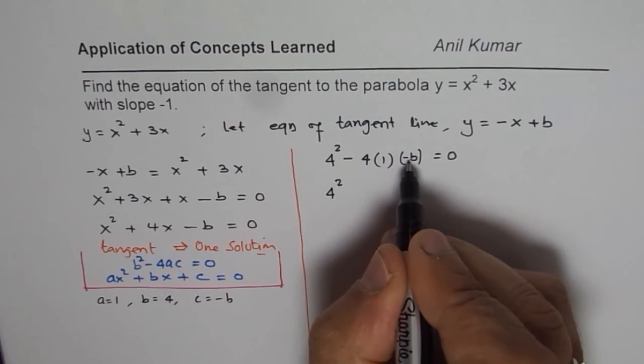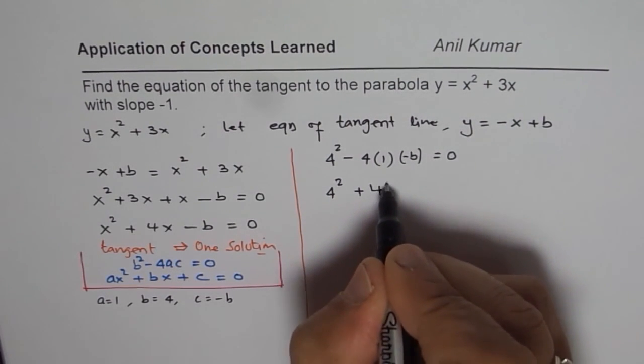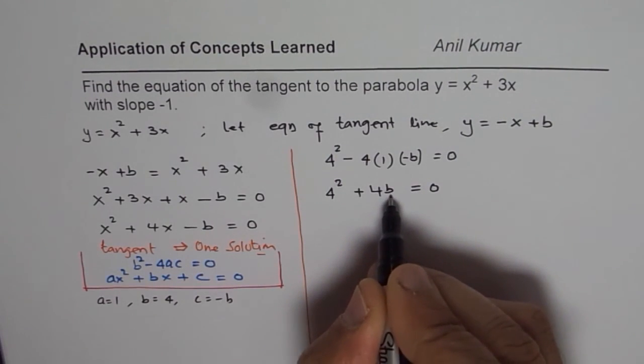Now, we can solve for it. So, we have 4 square minus and minus becomes plus. We get plus 4b equals to 0. We can solve for b now.